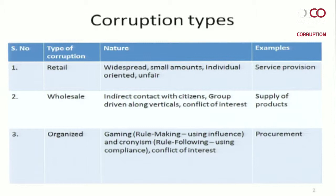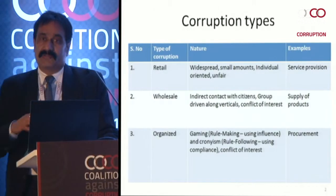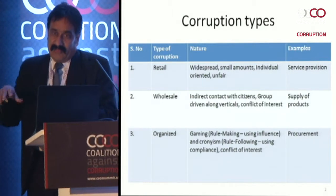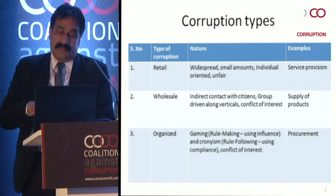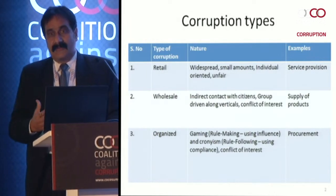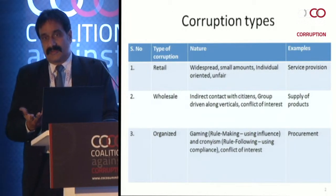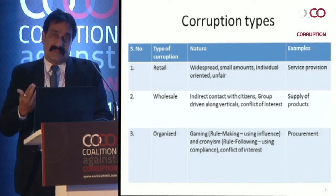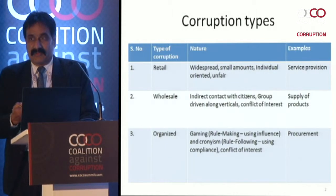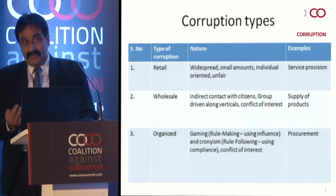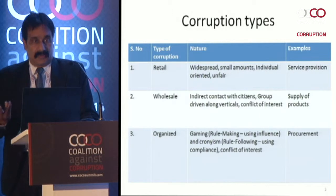The second type is wholesale corruption, which has a little indirect contact with citizens, is group driven, and largely operates along verticals — for example, the station house officer, MLA, and everybody coordinating — or it could be a vertical going along the department with severe conflict of interest. Finally, there is organized corruption, where gaming and cronyism are rampant in procurement and rulemaking.